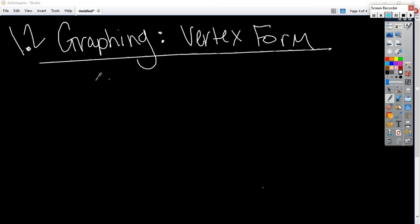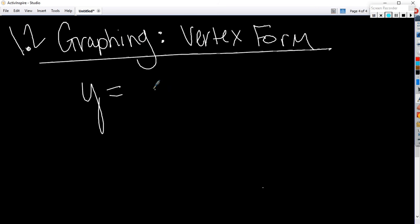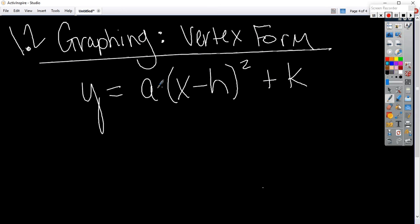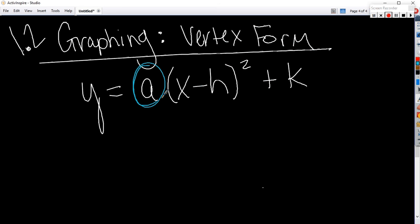So today we're going to talk about vertex form. And let me show you what it looks like. Some different variables in here, some of the same variables. And just like standard form told us several things without actually graphing, vertex form tells us several things also. The A in front does the exact same thing that the A in standard form does. So what does it tell us?